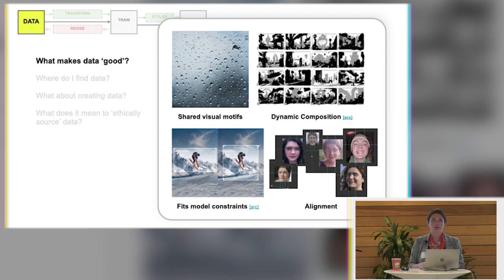We also need to fit model constraints. So you have to consider basically like depending on which model you're using, maybe it only uses square images. And so even if you're collecting landscape and portrait images, you may know that they're going to be cropped later. And so you want to consider that when you're collecting the images.